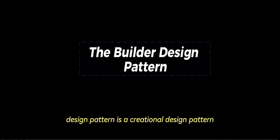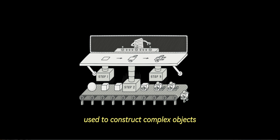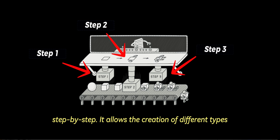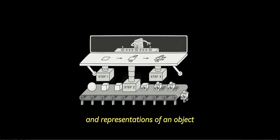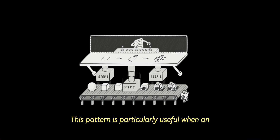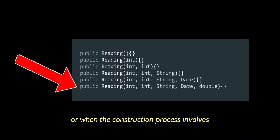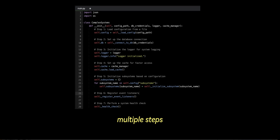The Builder design pattern is a creational design pattern used to construct complex objects step-by-step. It allows the creation of different types and representations of an object while keeping the construction process the same. This pattern is particularly useful when an object requires numerous parameters to be initialized or when the construction process involves multiple steps.